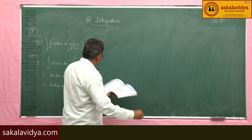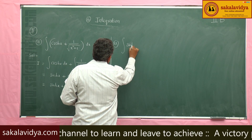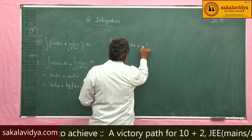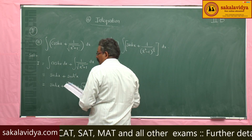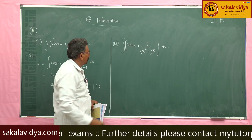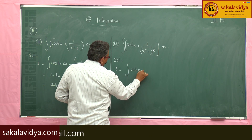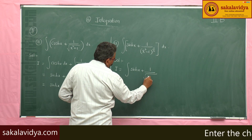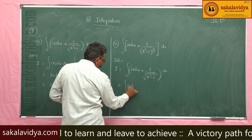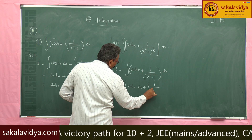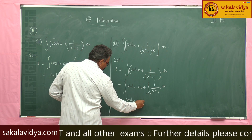Next, the twelfth problem: integral of (sinh x + 1/√(x² - 1)) dx. Solution: I equals the integral of sinh x dx plus the integral of 1/√(x² - 1) dx. This is cosh x + cosh⁻¹ x.